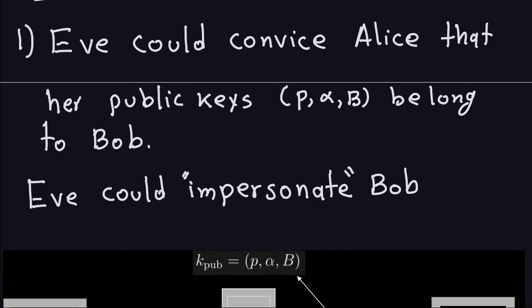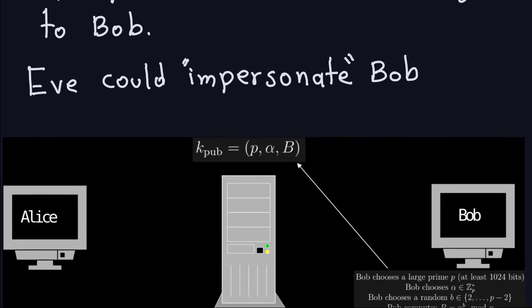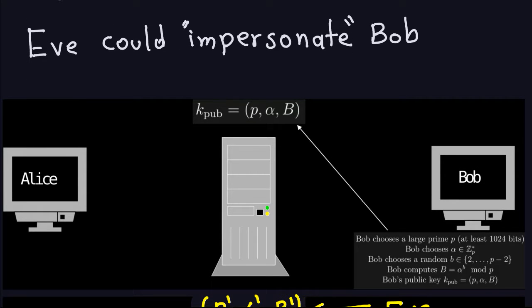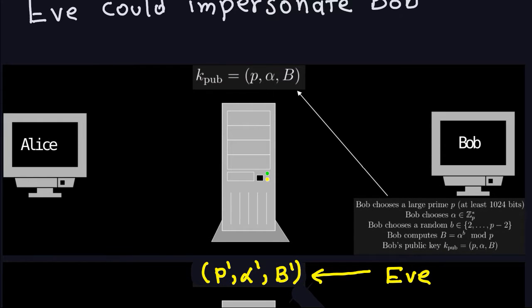If you recall what the ElGamal is, at the first phase Bob does the setup, which is he's going to publish P, Alpha and B. P is the prime number, Alpha is the generator, and B is another number computed from Alpha doing a modular exponentiation. So Bob publishes that, places it on his website, on a server, or anywhere else.